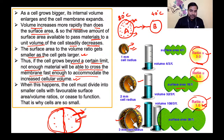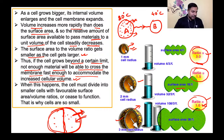ठंडे प्रदेश में height ज़्यादा होगा — polar bear का example लीजिए। Polar bear size में बड़ा होता है, लेकिन in comparison to its volume, उसका surface area reduced होता है, और वो उस माहौल में well adapted होता है। अंदर की गर्मी को अंदर ही काफी दिनों तक रख सकता है क्योंकि surface area is lower in comparison to volume।